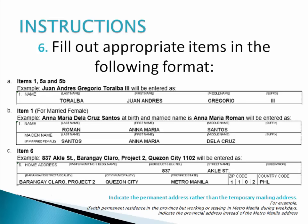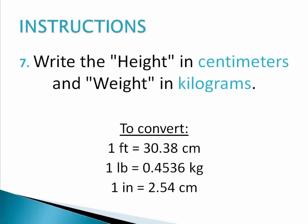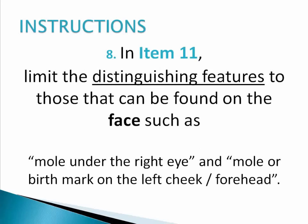The next step is to fill out appropriate items in the following format. Make sure you follow the format to avoid any discrepancies on your personal information. Write the height in centimeters and weight in kilograms, and follow the conversion guide below. In item 11, limit the distinguishing features to those that can be found on the face, such as a mole under the right eye or mole/birthmark on the left cheek or forehead.